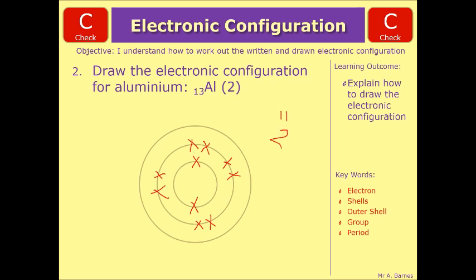Which gives you 3 remaining, which goes on the outer shell. So if you were to do the written electronic configuration for this, it would be 2, 8, 3. So you'd get one mark for having 3 in the outer shell, and one mark for the rest of it being correct.